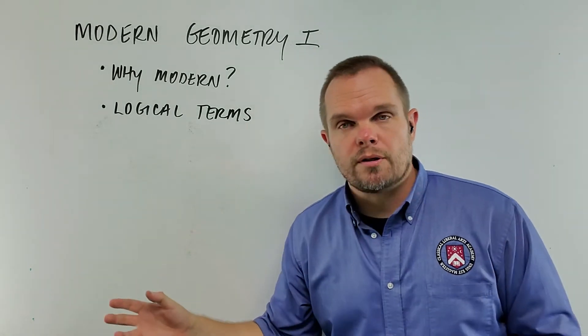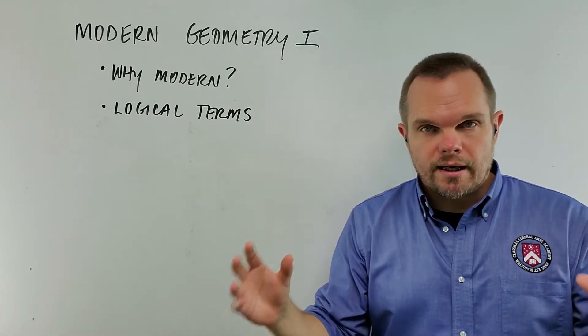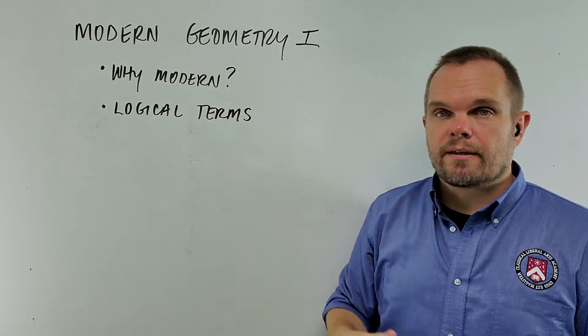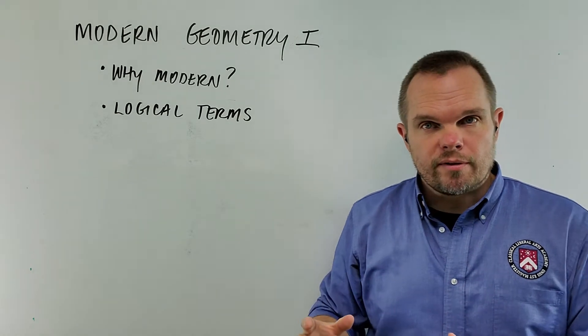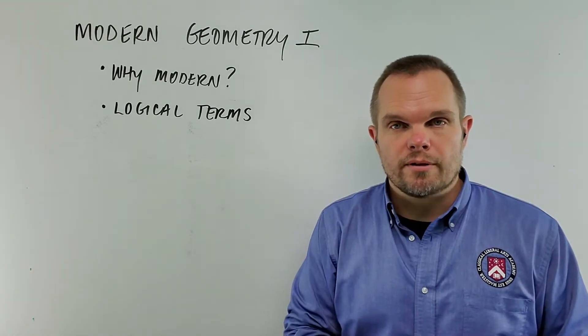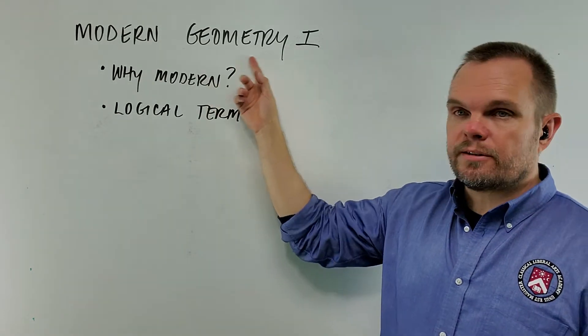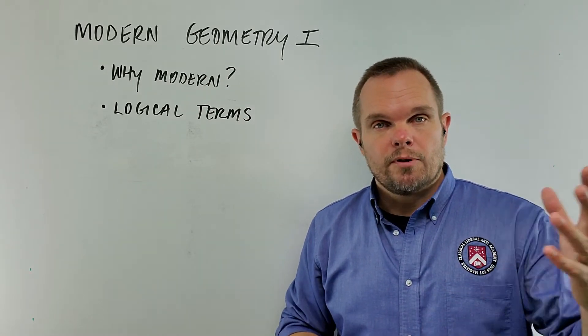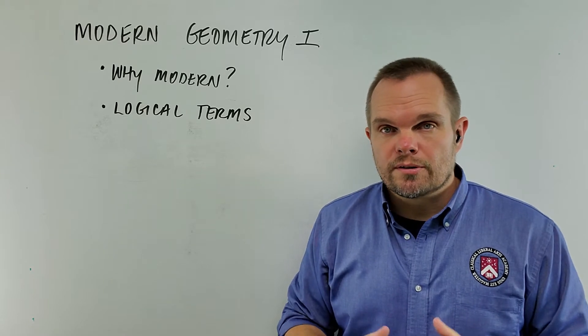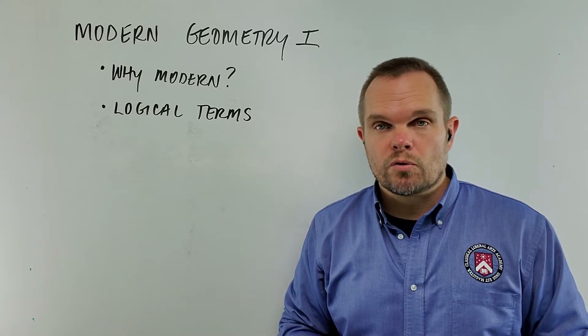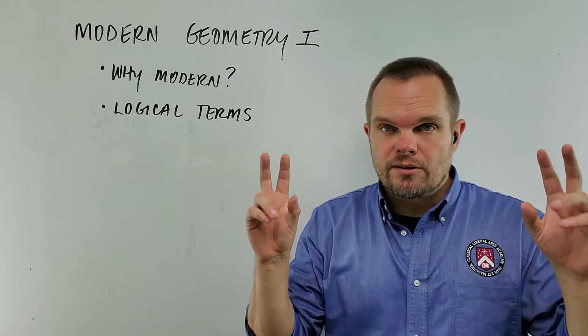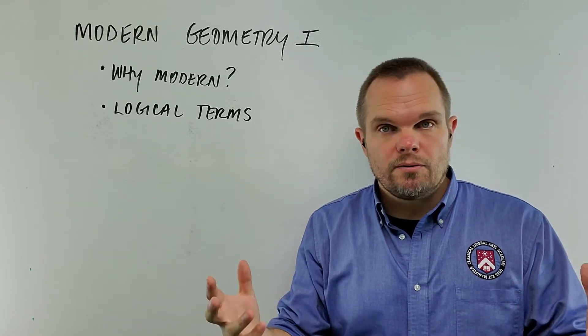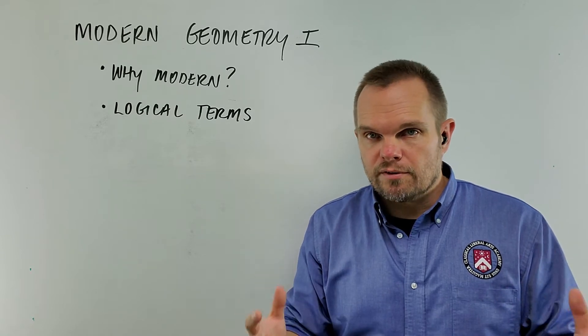So in modern schools, which are focused on science and mathematics, we have courses like modern geometry, which are different from classical geometry, and yet they use the same name, which creates some confusion. You may look around and see students that you know who are in modern schools or in other schools that claim to be classical, and they may be studying geometry, and it sounds good, but it's actually a different study.